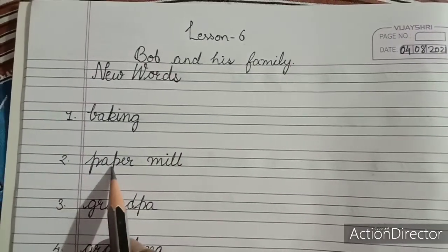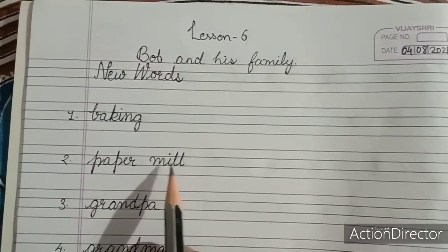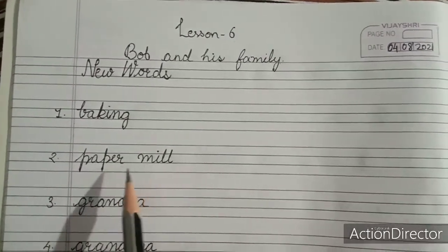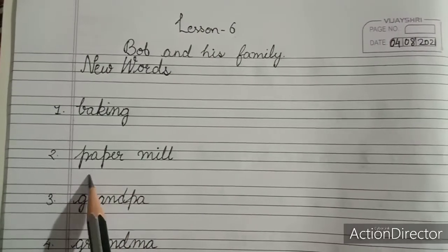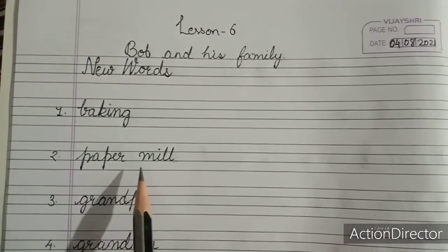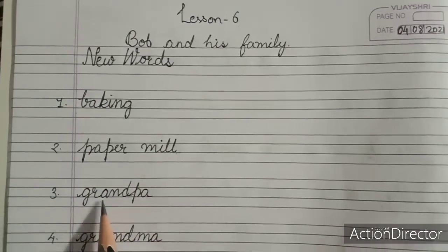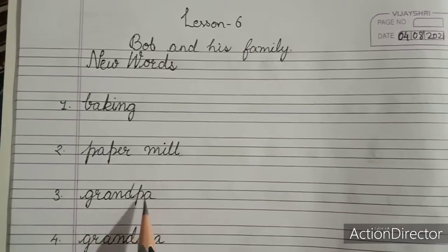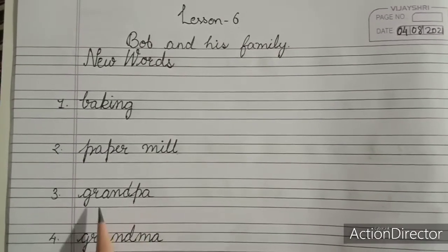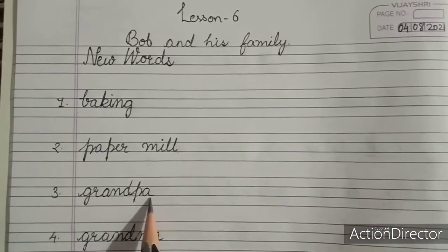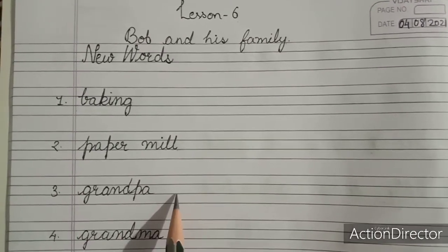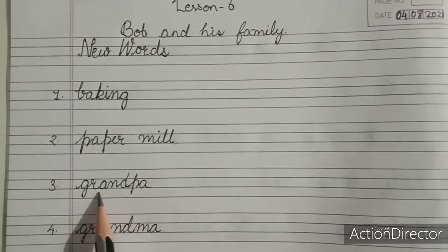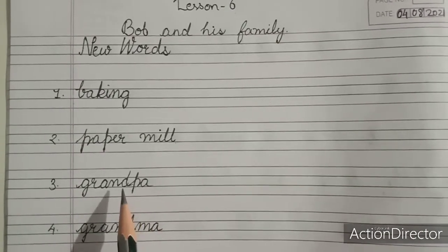Next is P-A-P-E-R paper M-I-double-L mill. What is it? Paper mill. So paper mill means where we make paper. Then third is grandpa. G-R-A-N-D-P-A. Grandpa, short form for grandfather. Instead of writing grandfather fully we can also write grandpa. So grandpa means grandfather.